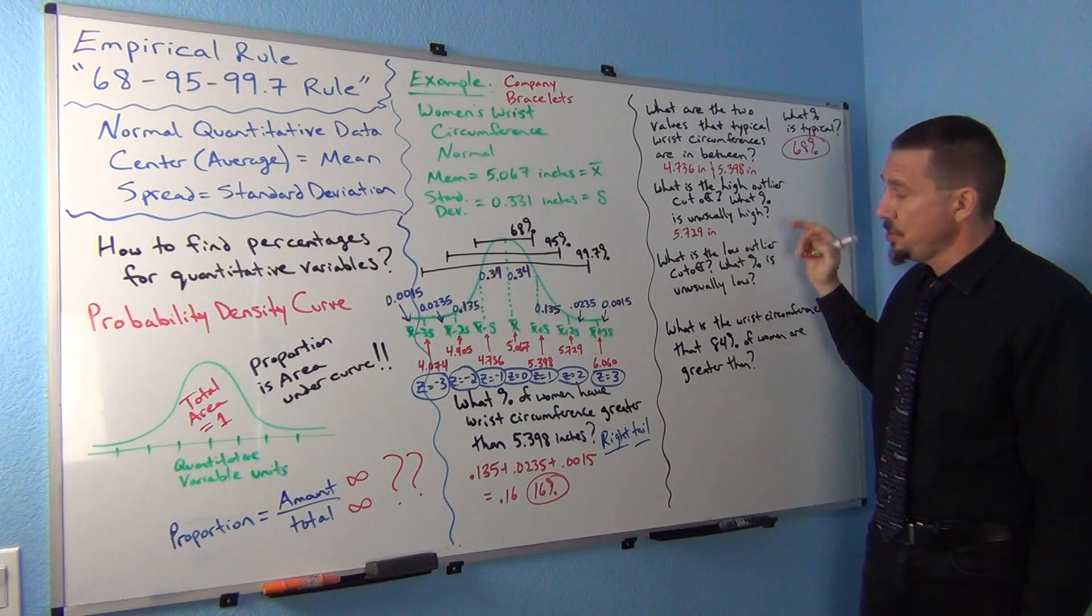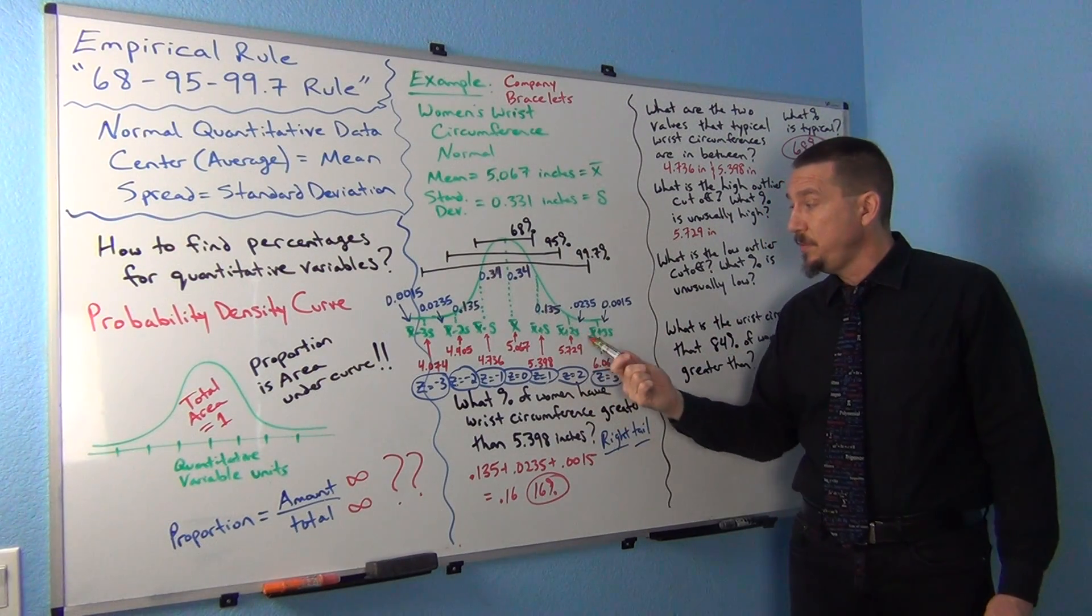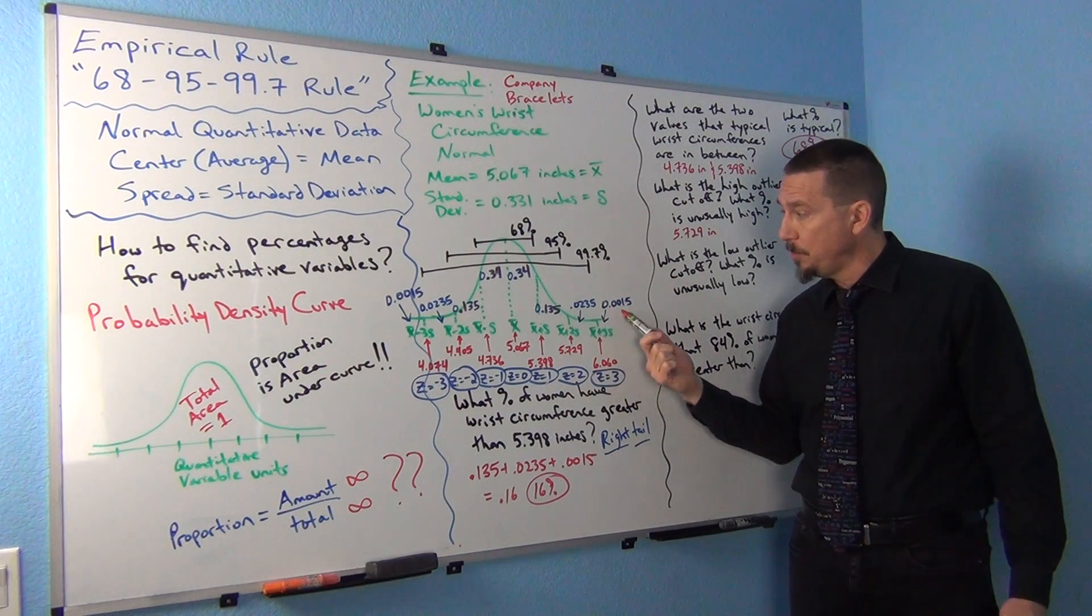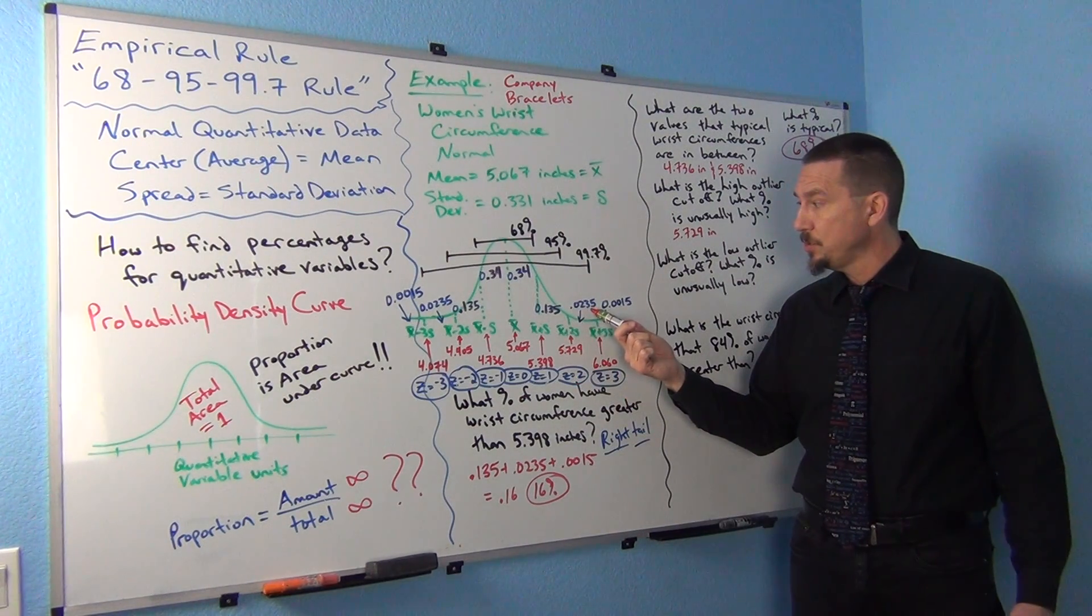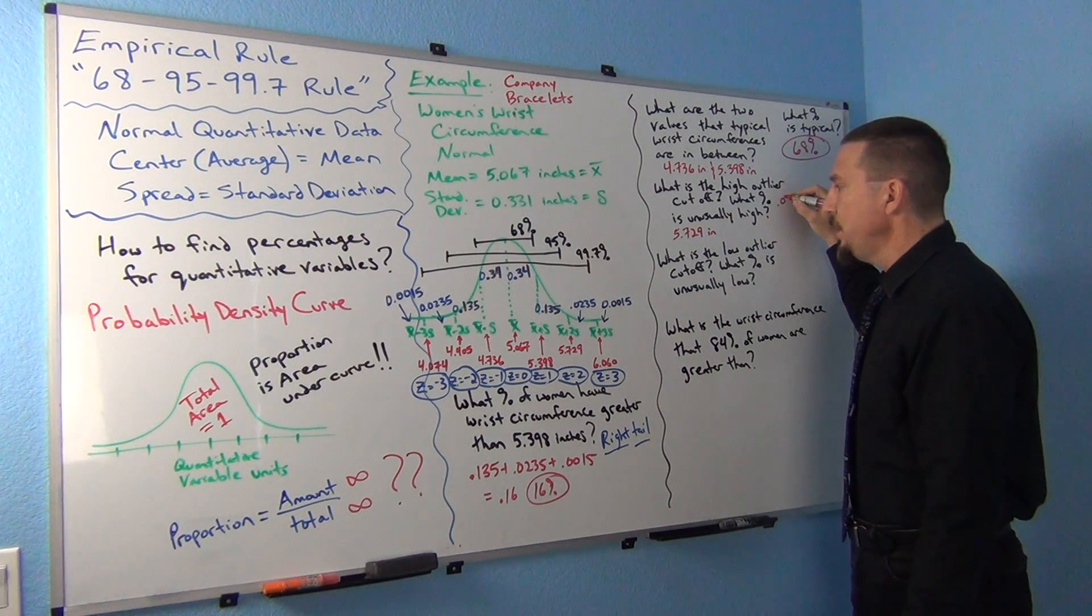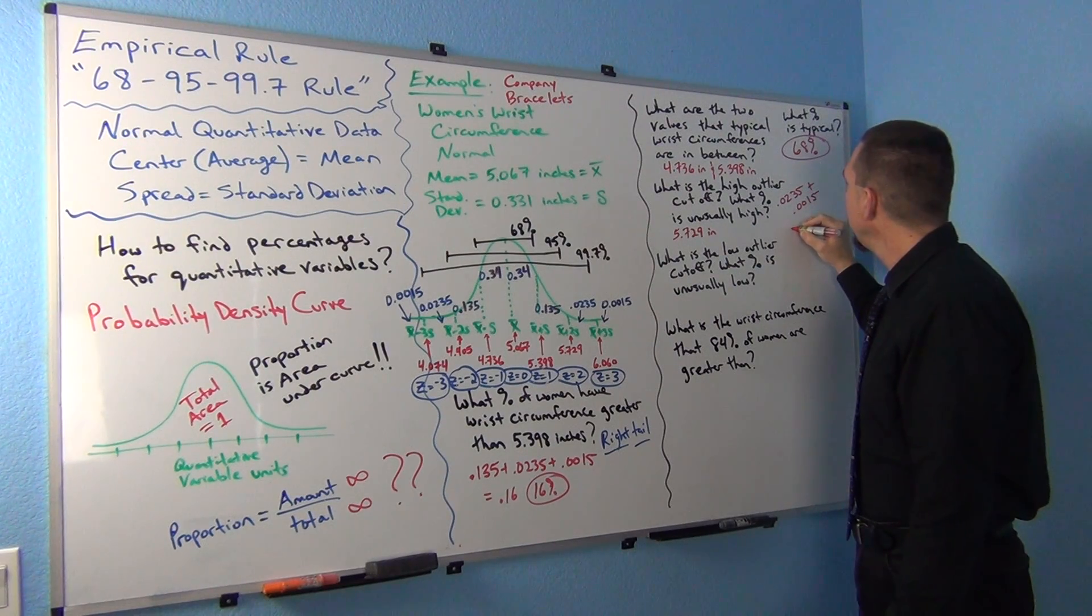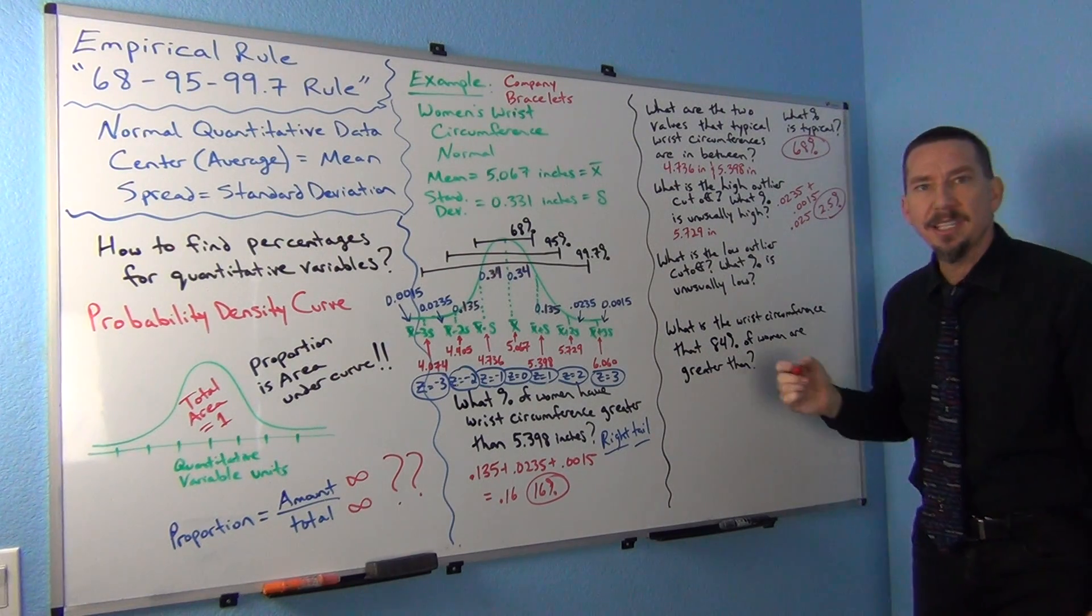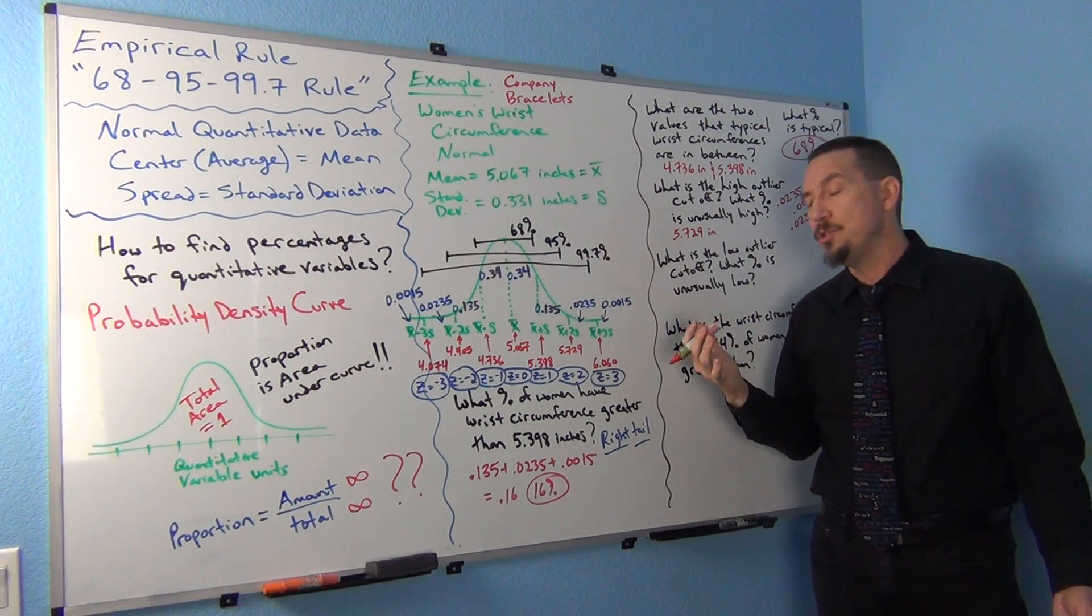Notice what percentage is unusually high. We're looking for anything above two standard deviations. We're looking for all those two sections that are above 5.729, or a z-score of 2. We have 0.0235 and 0.0015, so if I did 0.0235 plus 0.0015, I'd get 0.025, or 2.5%. Didn't we say when we studied normal data that about the top 2.5% are unusually high?